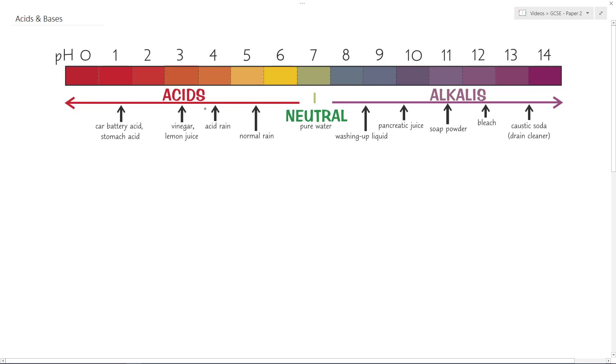The easiest way to look at acids and bases is probably to start with the pH scale, which looks a little bit like this. So this is a fairly generic pH scale. You can see it goes from 0 on the left hand side right across to 14.